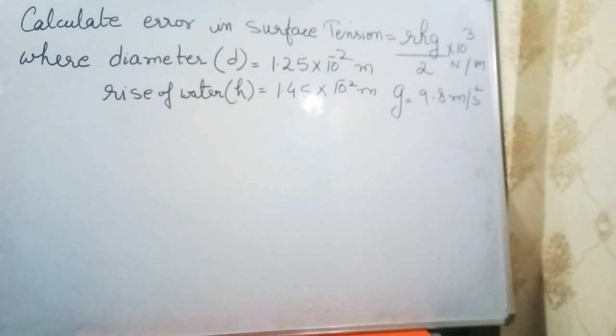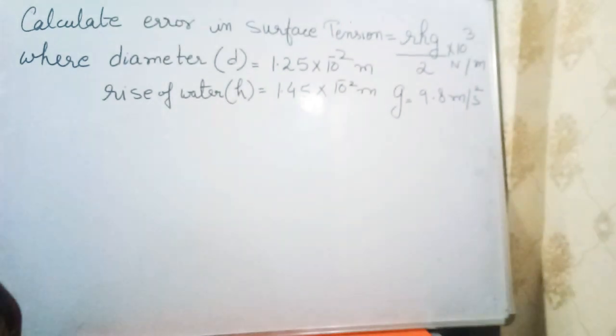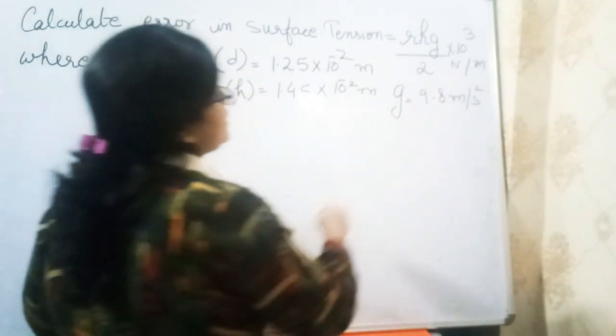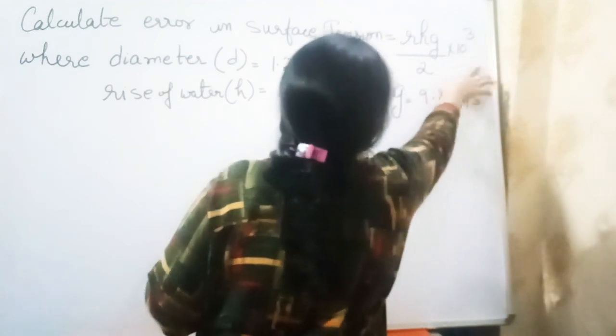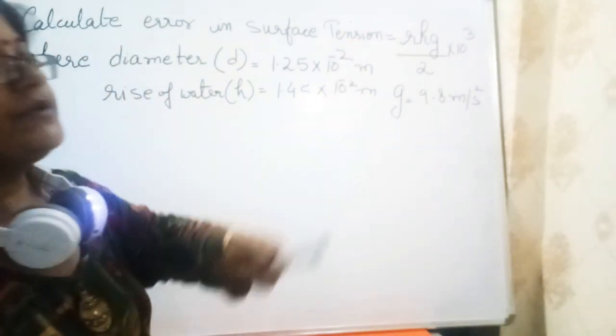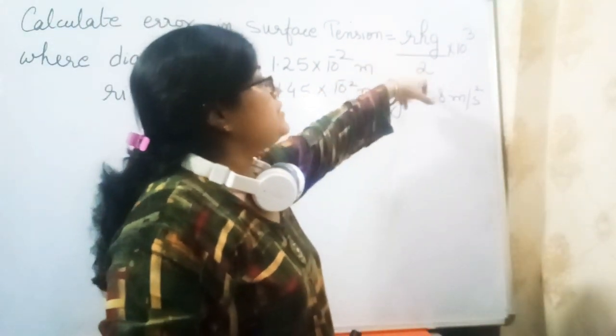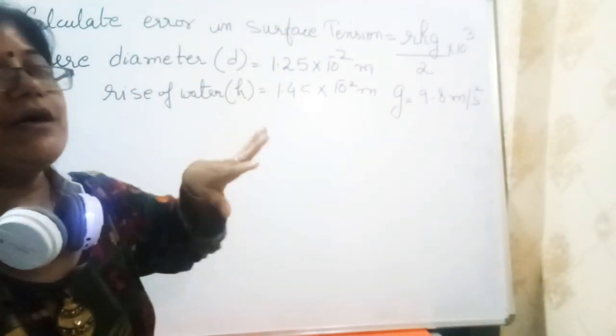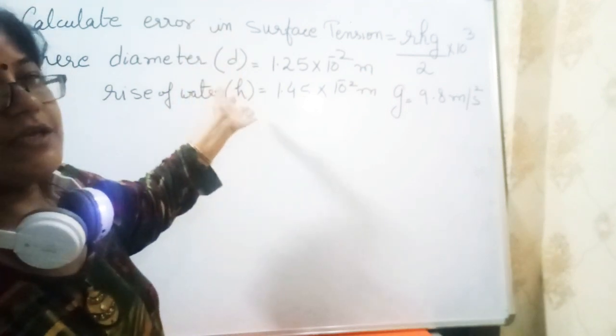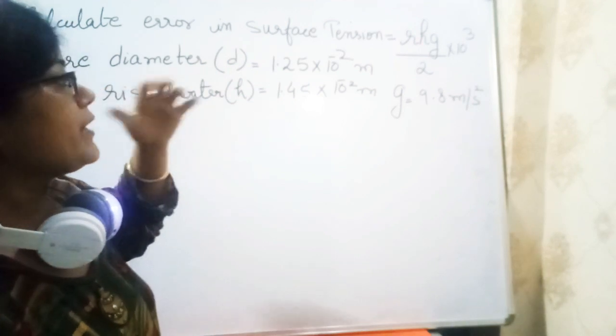Watch the next question on your screen. Calculate the error in surface tension, where the formula for surface tension is RHG over 2 times 10 to the power 3. This question was actually asked in the IIT examination, but I'm writing the question in a precise way, only the things which are needed.